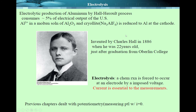It is said that Emperor Napoleon, when he ate with others, used aluminum spoons and forks for himself, but gave his guests golden spoons and forks. At that time, aluminum was a really precious metal. But these days nobody thinks aluminum is precious.